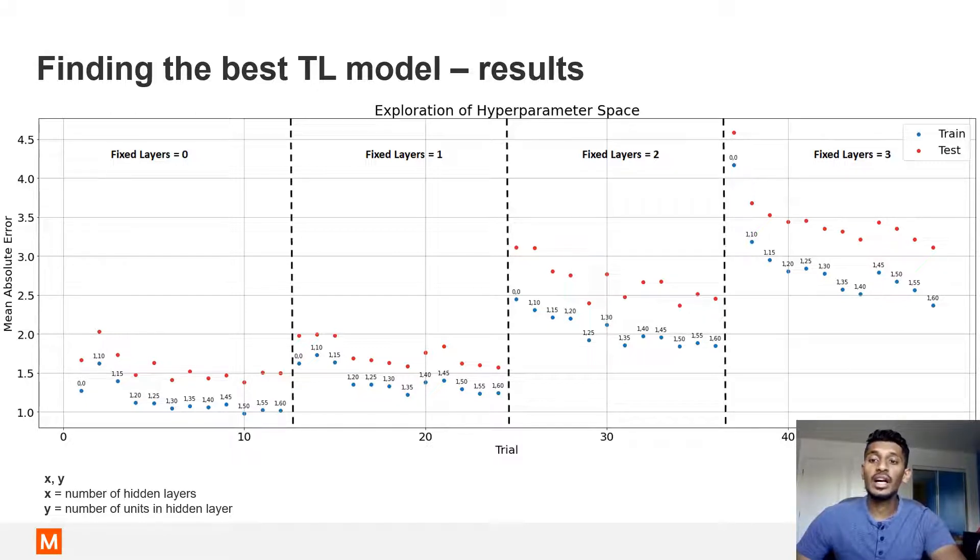When more layers are fixed, a higher error is observed. This makes sense as more fixed layers means less parameters are trained and therefore would take longer for the training process to converge.